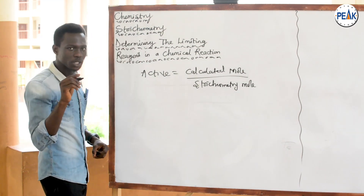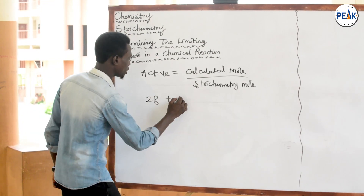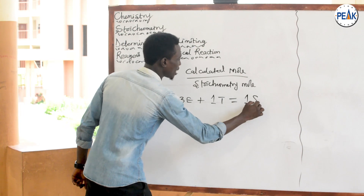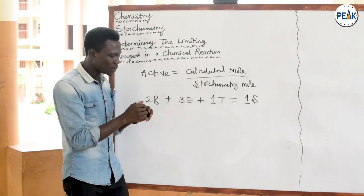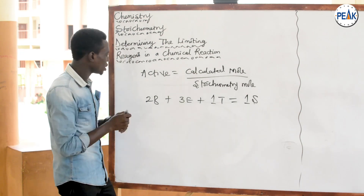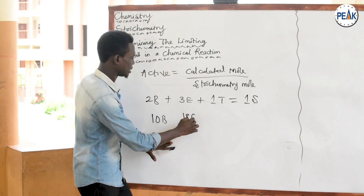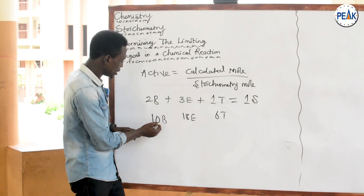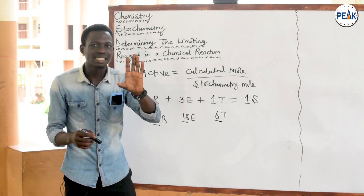Going back to the sandwich analogy: two loaves of bread react with three eggs and one piece of tomato to give one sandwich. That tells us that 2, 3, and 1 are simply the stoichiometric moles. I was then told: how many sandwiches from 10 loaves of bread, 18 eggs, and 6 tomatoes? These given quantities are the calculated moles.